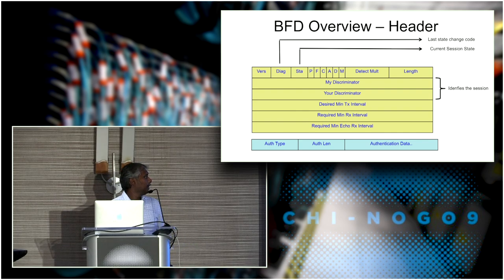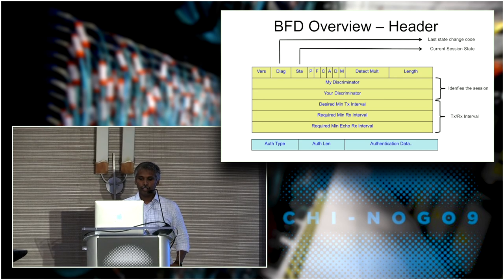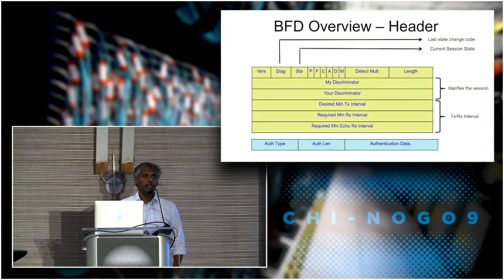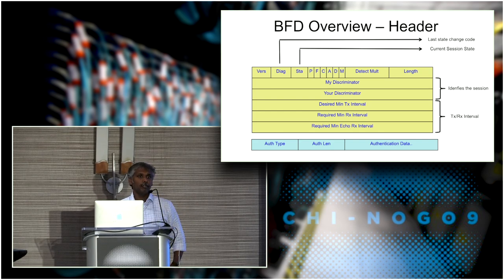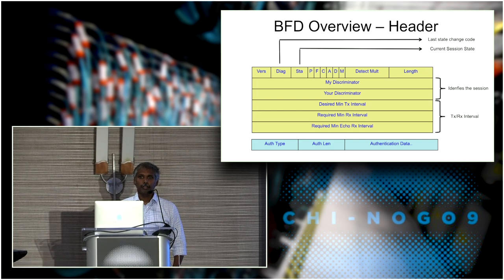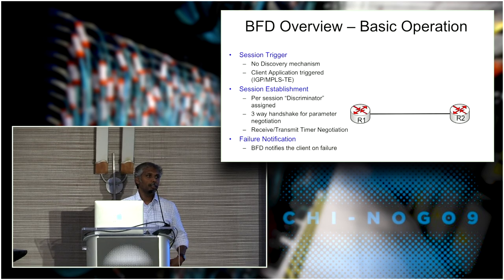We also have transmit and receive intervals, which are negotiated while establishing the BFD session. While BFD is fixed size, there is only one TLV proposed, which is authentication. The presence of a flag indicates the presence of this authentication, and it is used for secure BFD communication.